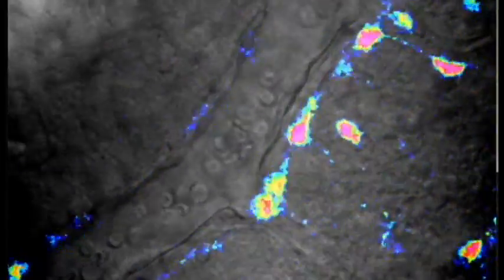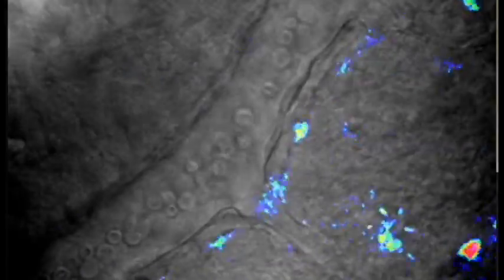This generates this cloud of superoxide in the tissues surrounding the nerve cells that leads to synaptic impairment.